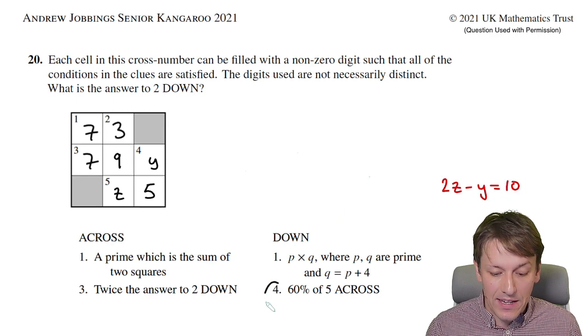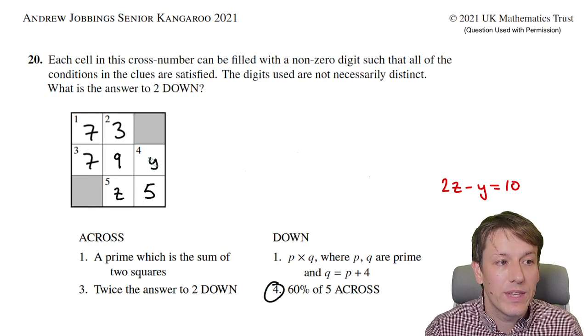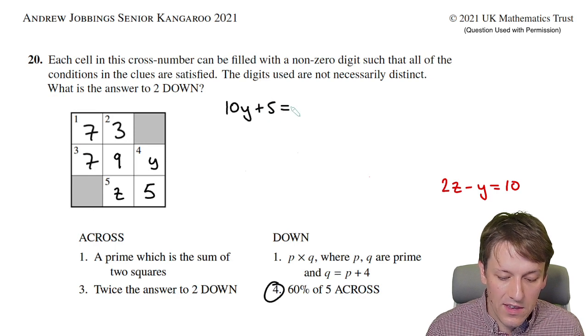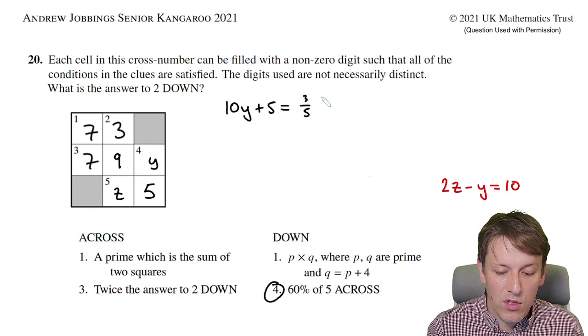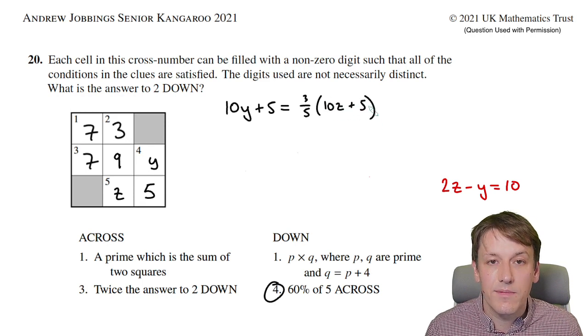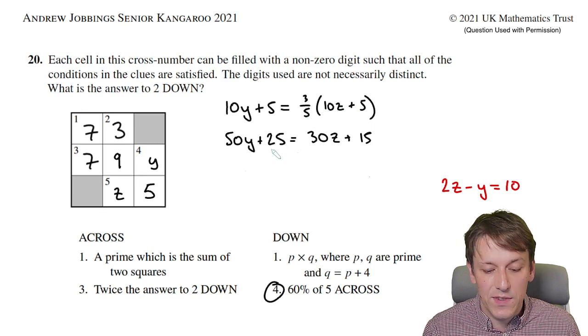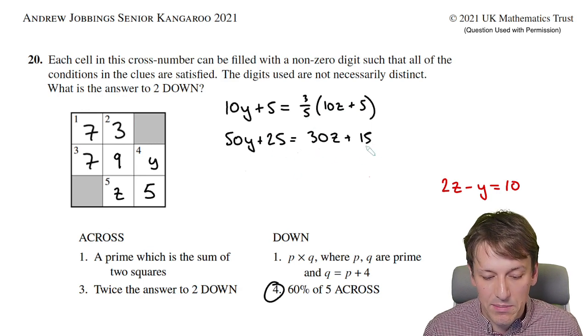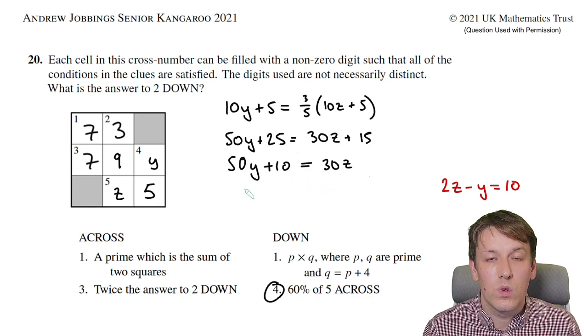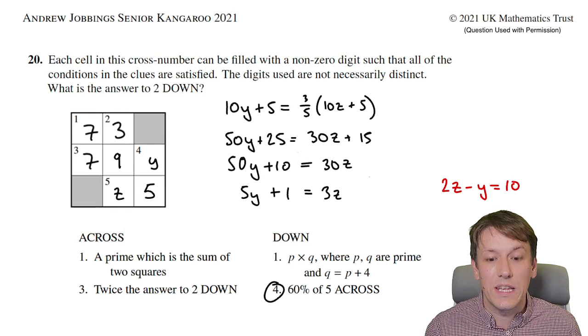Coming back to four down, which is 60 percent of five across: four down is y5, so that's 10y plus 5. We know that's three-fifths of 10z plus 5. Multiplying both sides by 5 and expanding gives 50y plus 25 equals 30z plus 15. Subtracting 15: 50y plus 10 equals 30z. Factoring out 10: 5y plus 1 equals 3z.